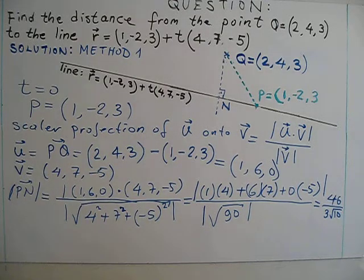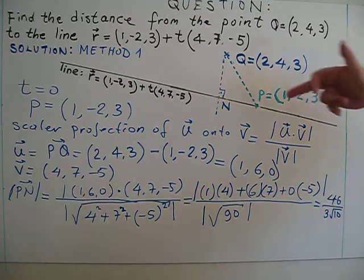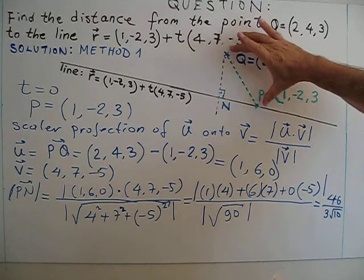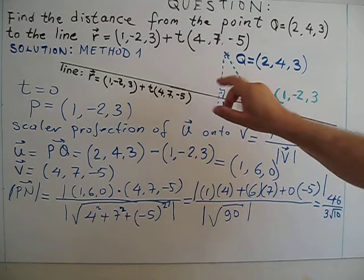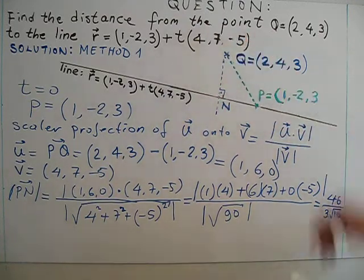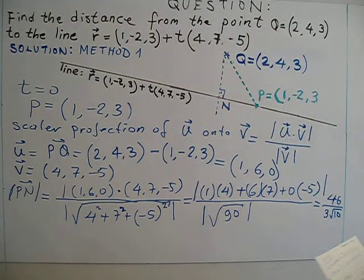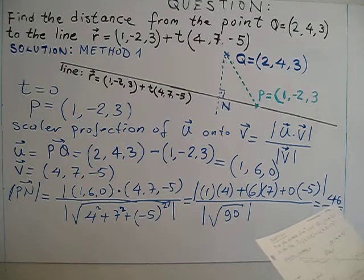So what I will do now, if I find PQ, magnitude of PQ, this distance, I've already found this one, so I can use Pythagorean theorem. I can find the distance. So how do you find PQ?